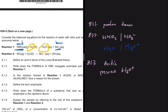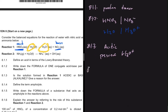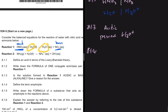8.1.4 says define the term ampholyte. An ampholyte is a substance that can act as both a base and as an acid — that's basically what an ampholyte is.